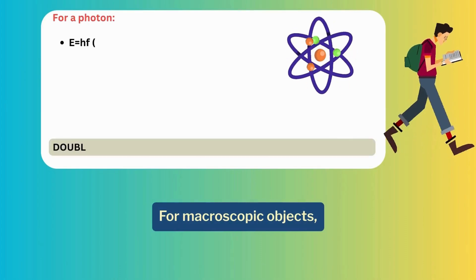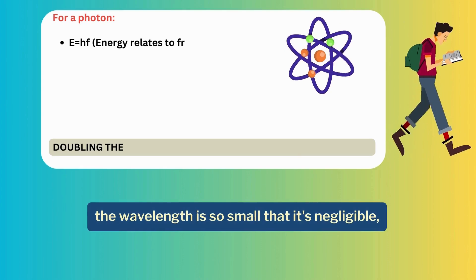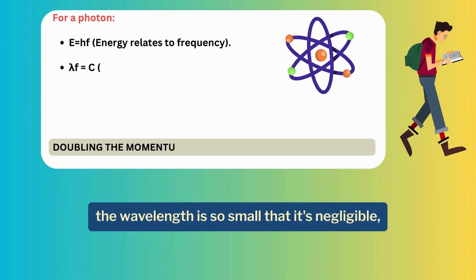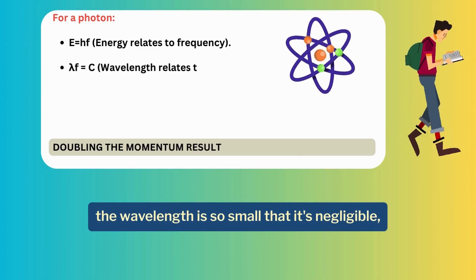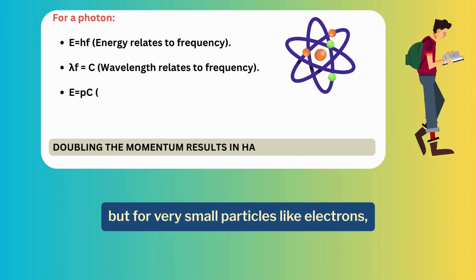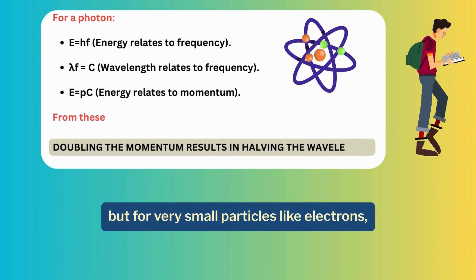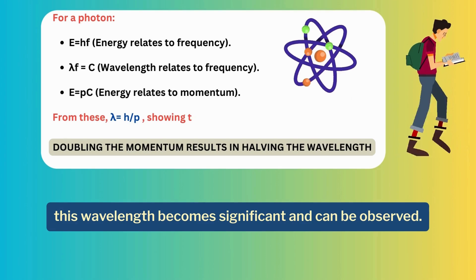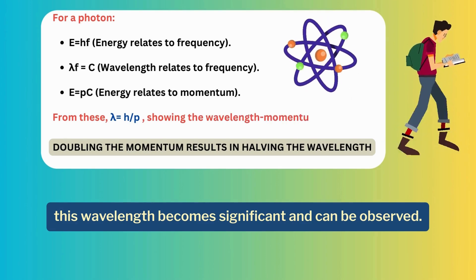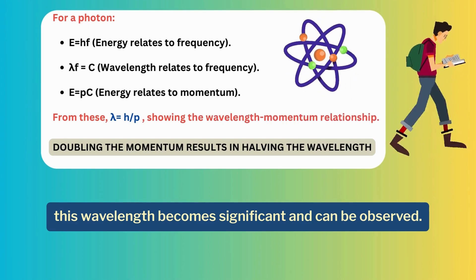For macroscopic objects, the wavelength is so small that it's negligible, but for very small particles like electrons, this wavelength becomes significant and can be observed.